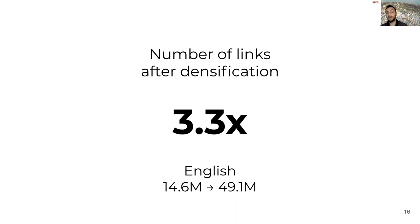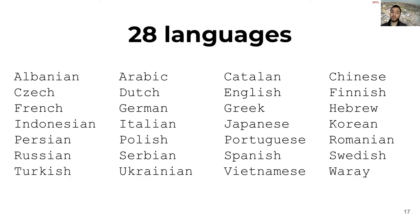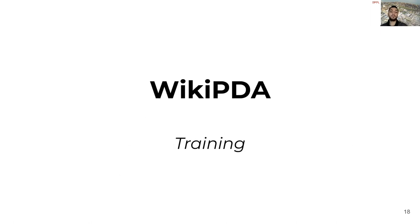After the densification step, we observe a significant increment in the number of links present on the page. On average, the articles get 3.3 more links with the English edition going from 14 to 49 million links. We repeated this process pipeline for 28 languages. We made sure to include a diverse set of language family, scripts, and cultures.